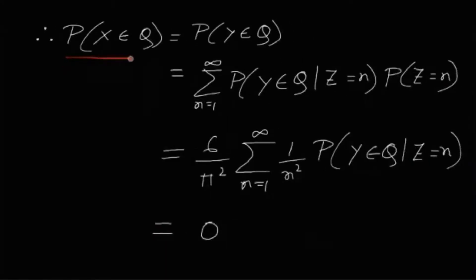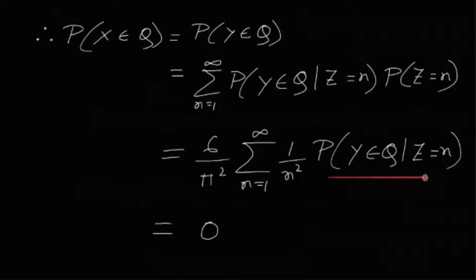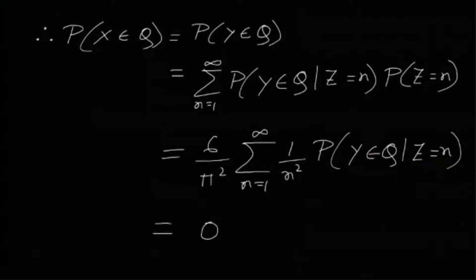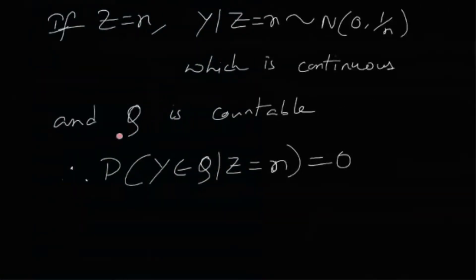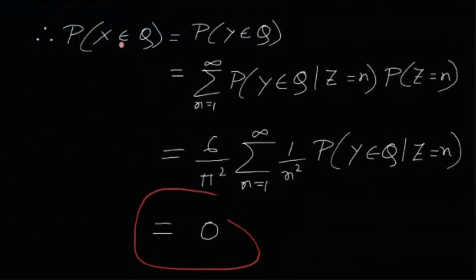So the probability X belongs to Q is the same as the probability Y belongs to Q. Again, using the law of total probability, this is the summation over n from 1 to infinity of the probability Y belongs to Q given Z equals n, times the probability Z equals n, which is 6/(π²n²). This conditional probability is actually 0, because when Z equals n, Y given Z follows Normal(0, 1/n), which is a continuous distribution. The set of rational numbers Q is countable, and for a continuous random variable, the probability of belonging to any countable set is 0. Hence the entire expression turns out to be 0, and therefore the probability X belongs to Q equals 0.